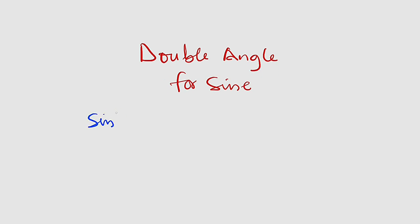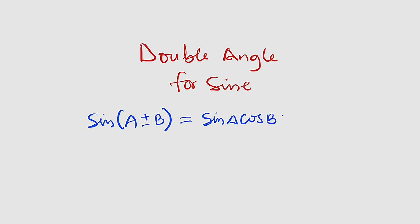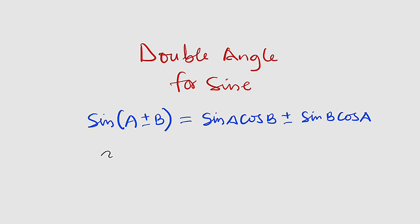You should know that if you have sine of an angle A plus or minus another angle B, this is equal to sine of the first angle multiplied by cosine of the second angle, then plus or minus sine of the second angle B multiplied by cosine of the first angle. So if you have addition you use addition, if it is subtraction you use subtraction.